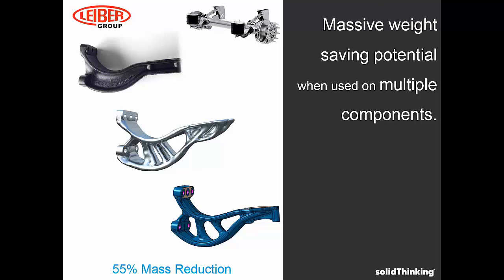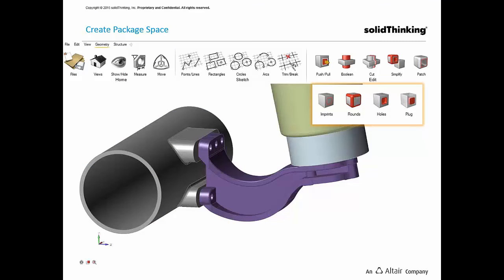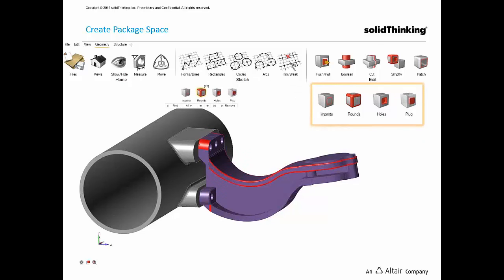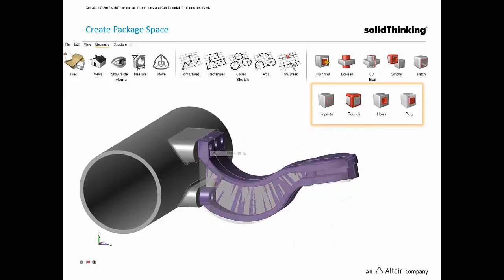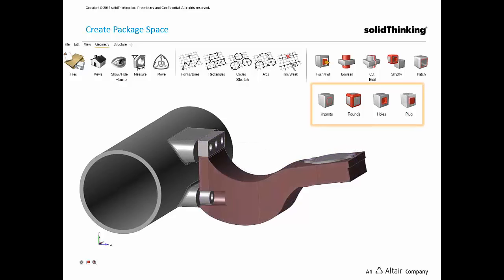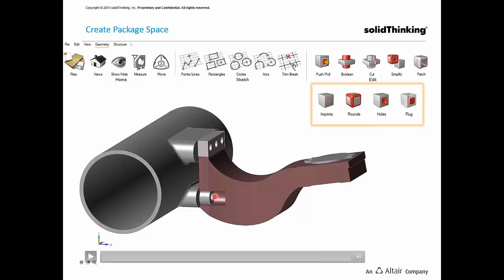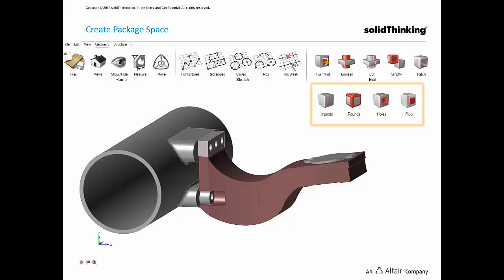We have also documented the workflow they adopted. Initially they created a package space around the existing component — this is the first step in optimization. You create a design space, and the larger the design space, the more optimum the design. They got rid of features and created a larger package space in INSPIRE, as seen on screen. The maroon region is the design space and the gray regions are all the non-design spaces. The design space is the region from where INSPIRE carves away material, and non-design spaces are regions where we don't want INSPIRE to remove any material.